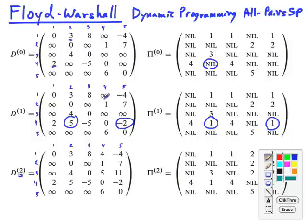What about from 1 to 4? Well, 1 to 4 is infinite. But if we go via 2, 1 to 2 costs 3, and 2 to 4 costs 1. So that's going to give us a cost of 4. And so this is going to say, yeah, we're going to do that via 2.